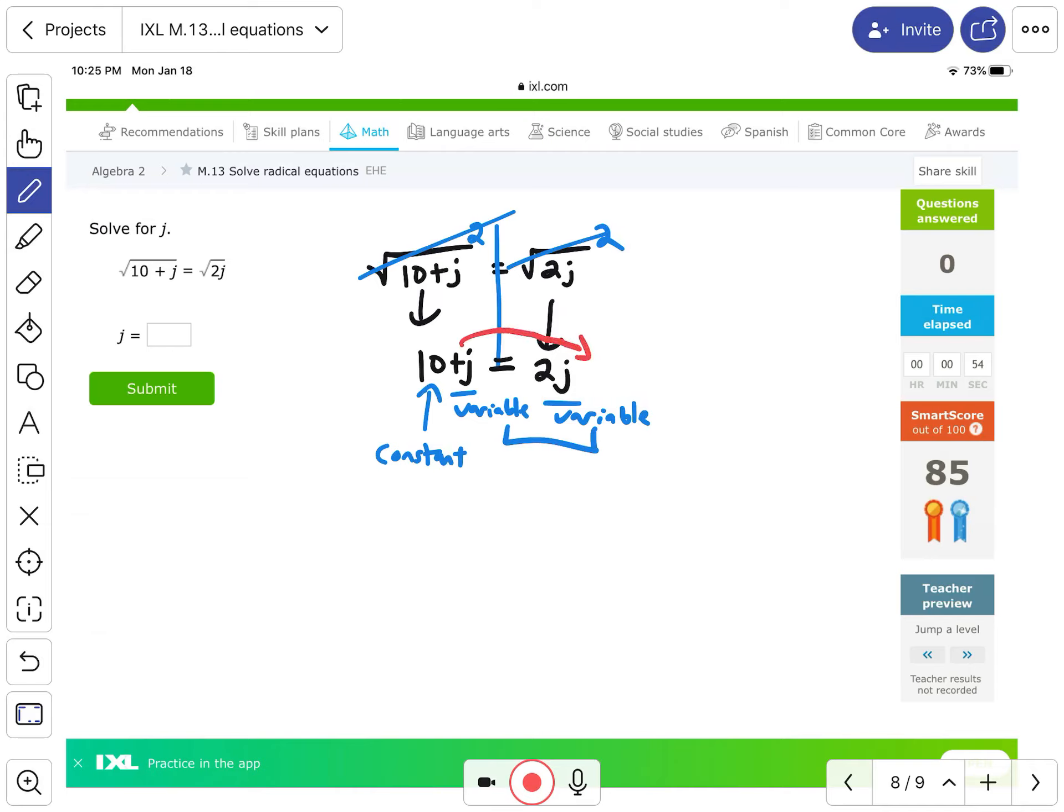I would want to combine these two, so I'd probably move this one over here on this side. And that way the constant terms on the left side of the equal sign and the variable terms will be on the right side. Okay, so I'm going to subtract j from both sides. Anything minus itself is gone or zero, and then 2j minus 1j, that's just 1j or actually just j. j equals 10.